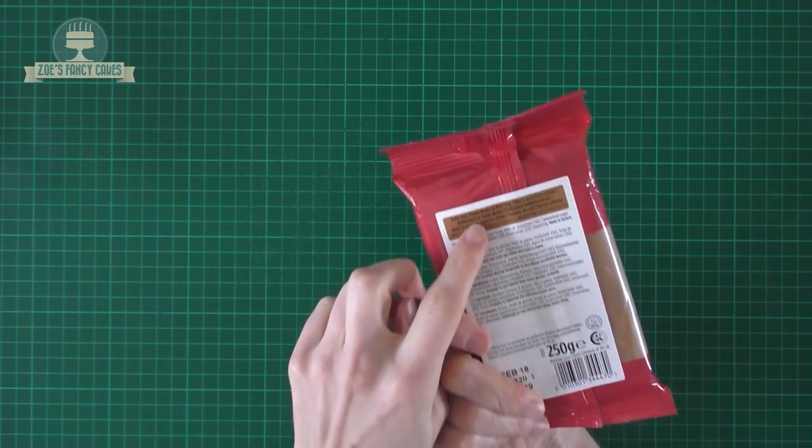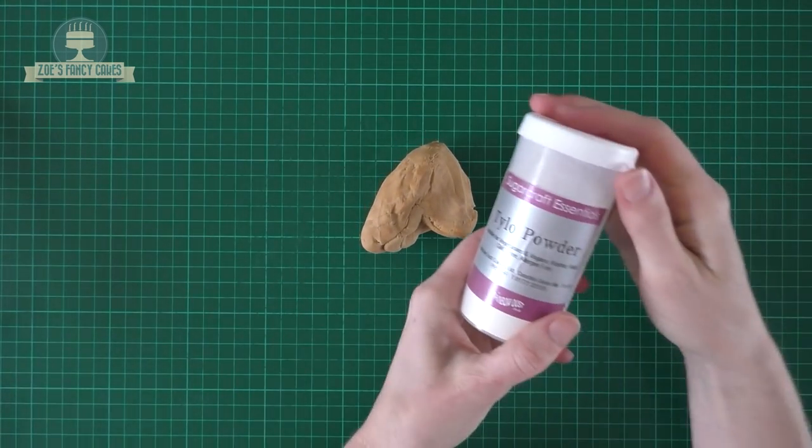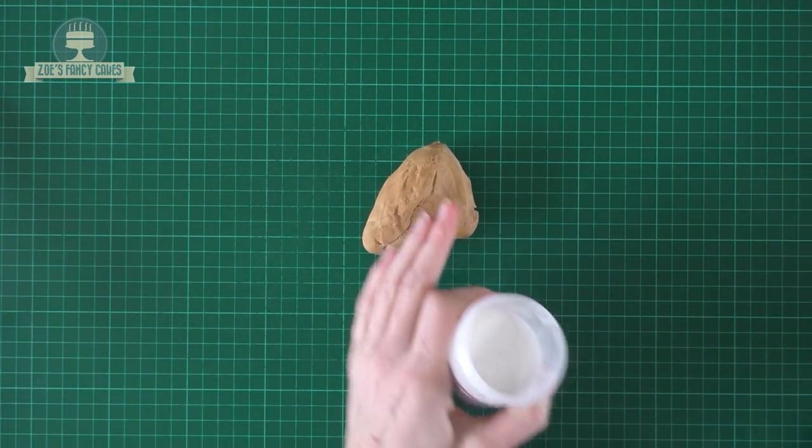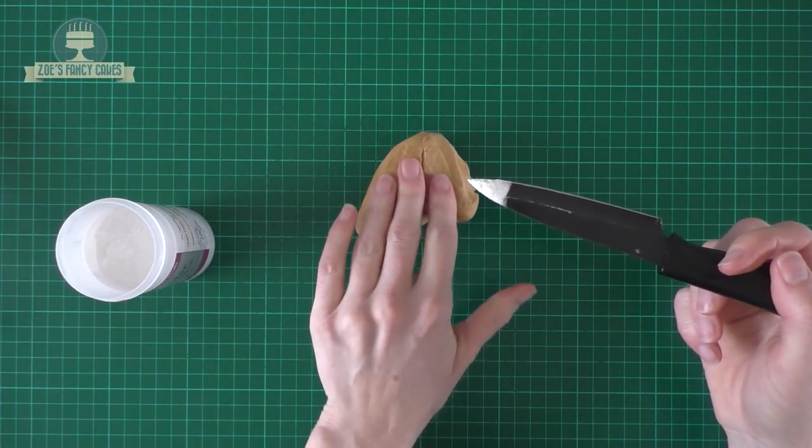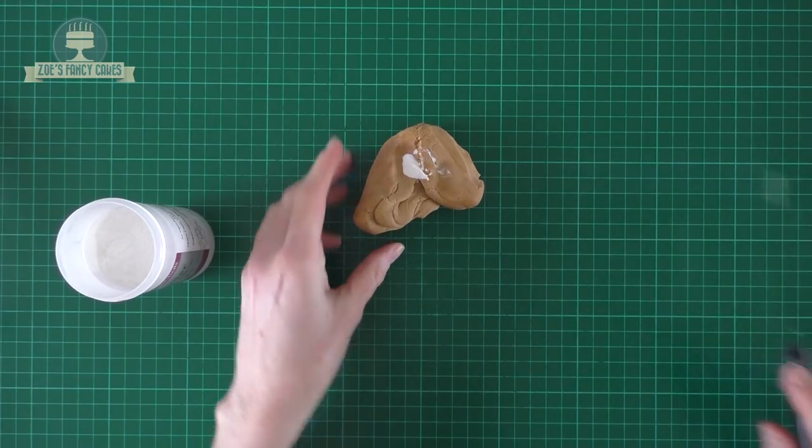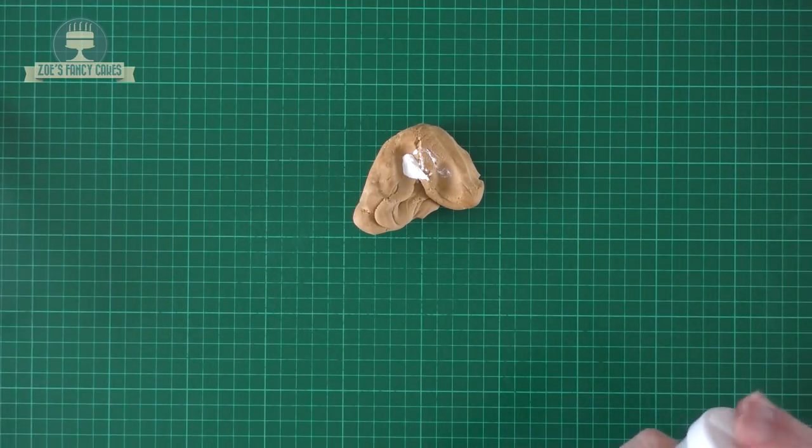I'm going to use some ready to roll icing, so I've got Renshaw's one here in teddy bear brown. It's actually okay to use on its own, but if you're finding it a little bit soft, just put in a little bit of Tylose powder.